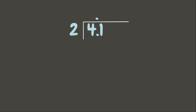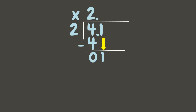4 divided by 2 is 2. 2 times 2 is 4. 4 minus 4 is 0. Bring down 1. 1 divided by 2 is 0. 0 times 2 is 0. 1 minus 0 is 1. Since there is still a remainder, when dividing decimals we need to add zeros to the dividend.